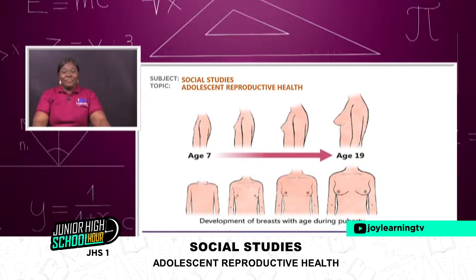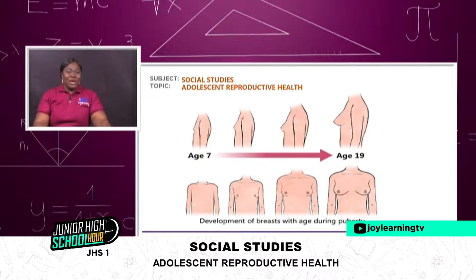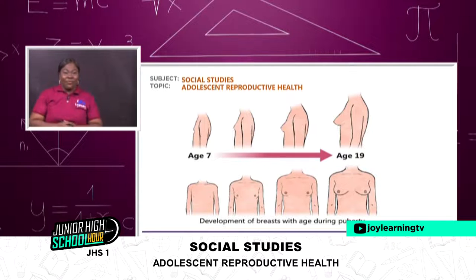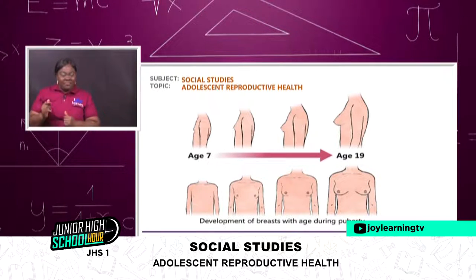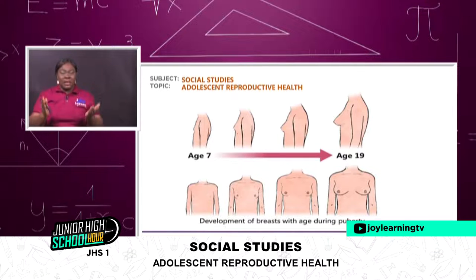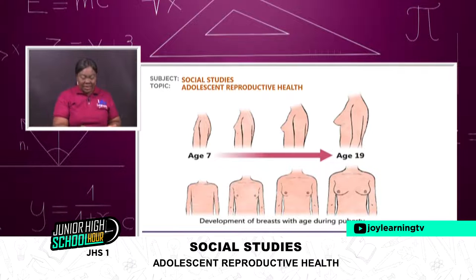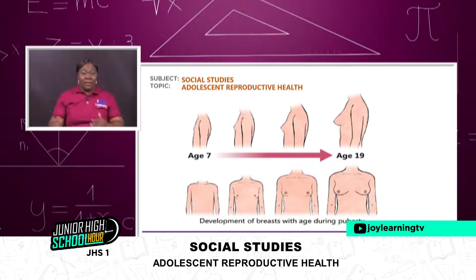There's another picture on your screen showing the development of breasts. I'll be giving you assignments on some of these pictures so observe very well. You can see in the first picture there is nothing, and as the person moves through the transition the breast is sprouting out a little by little until 19 years when the breast comes out fully. The breast develops gradually till the girl gets to 19 years.